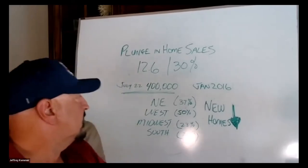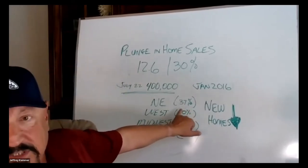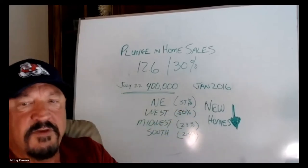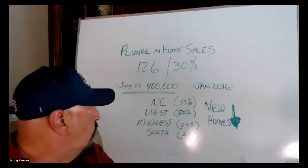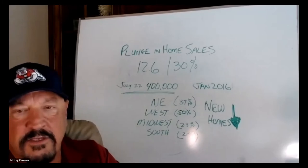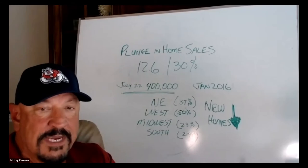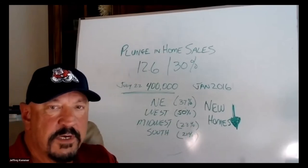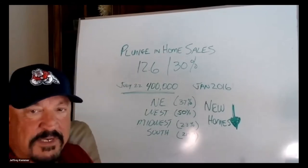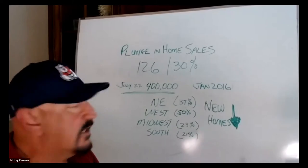Now when you look at specific areas, the Northeast, 37% drop in sales. The West, 50%. The Midwest, 23%. And the South, 21%. So if you're in the South, you do a lot of business in the South, good for you. Hang in there. That is the place to be doing business right now because sales are at least 80% of what they were.